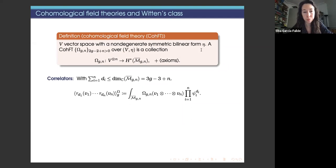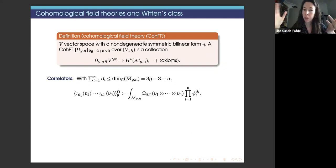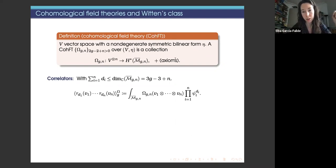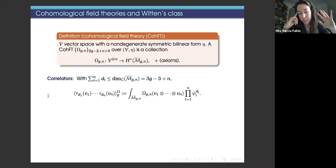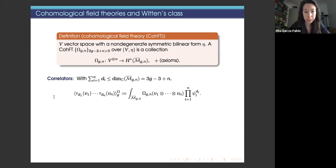We consider a vector space V with a non-degenerate symmetric bilinear form eta. A cohomological field theory (CohFT) is a collection of linear homomorphisms of this form, together with good behavior when the Riemann surface degenerates, plus some axioms. In general, we are interested in computing correlators, which are integrals over the moduli space of these cohomological classes, because they give important information about the geometry of M_{g,n}.